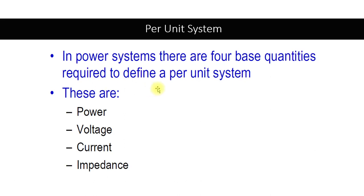First of all, let's discuss why we want the per unit system. The per unit system is required because if we want to solve any transmission network or any electrical network, we have to deal with different kinds of quantities. For instance, the capacity of a generator may be 100 MVA, 200 MVA, or 300 MVA.